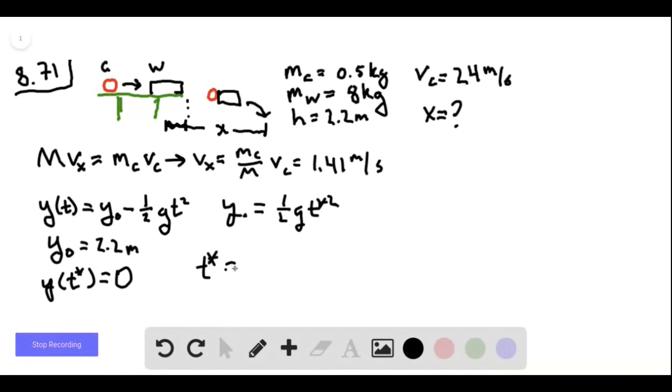So then t star is equal to the square root of 2y-naught divided by g. And this is 0.670 seconds.